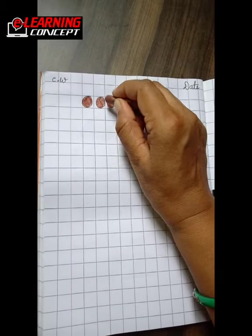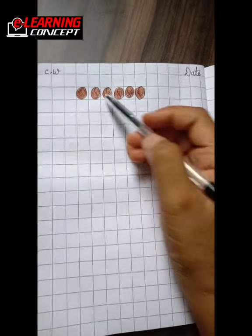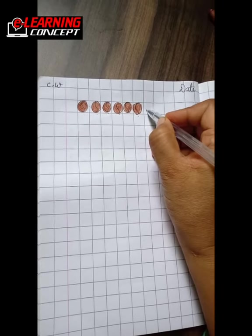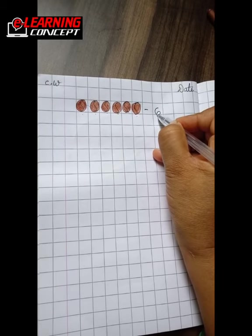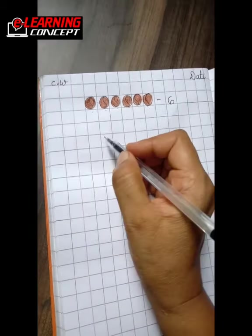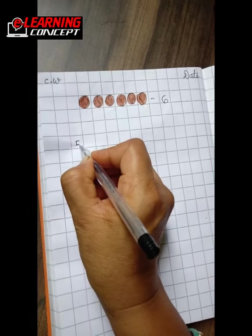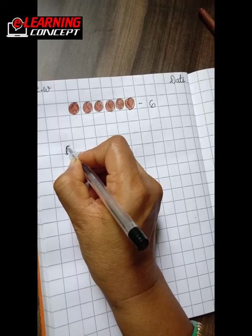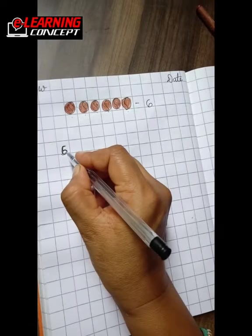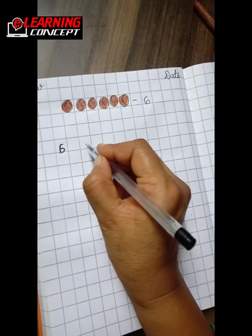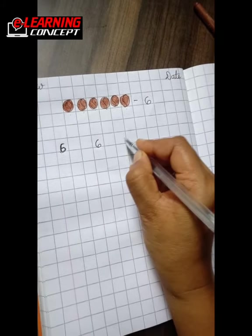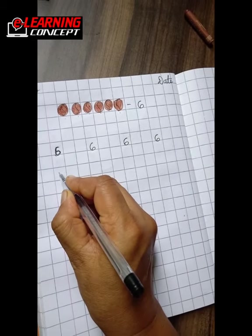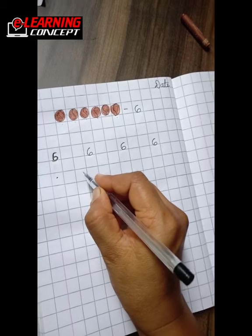Complete the color. How many balls? 1, 2, 3, 4, 5, and 6. And write 6. Now leave two boxes and 6, leave two boxes and 6. Put dot in the boxes.